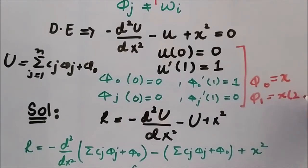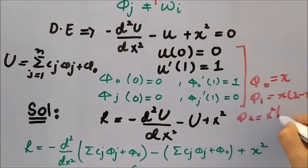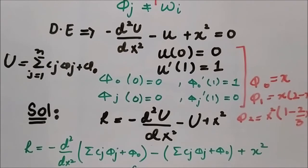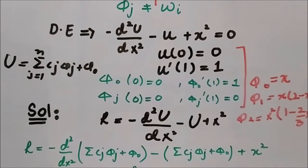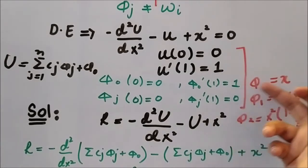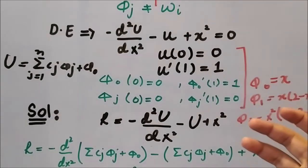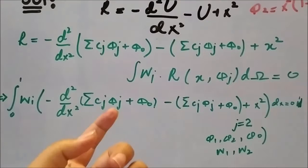Assuming the shape functions: phi_naught = x, phi_1 = x(2 - x), and phi_2 = x²(1 - (2/3)x). It is your task to verify that these three shape functions satisfy the given boundary conditions as well as the restrictions on shape functions in the strong form.